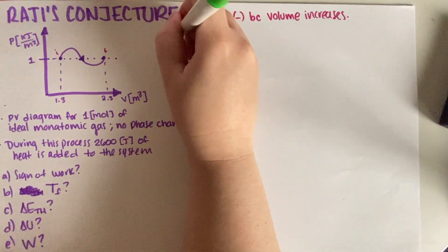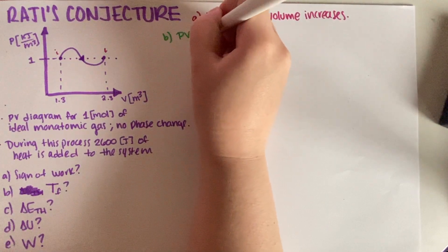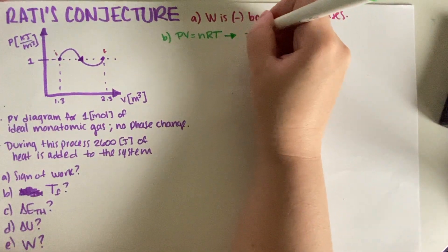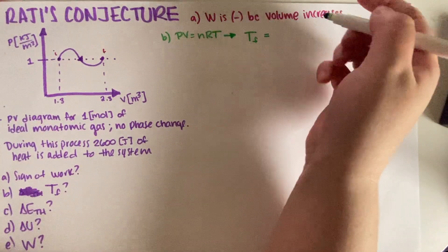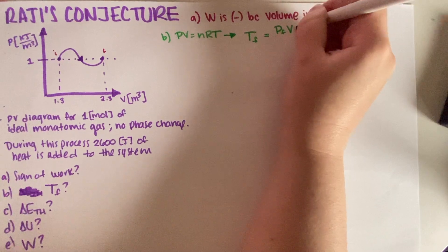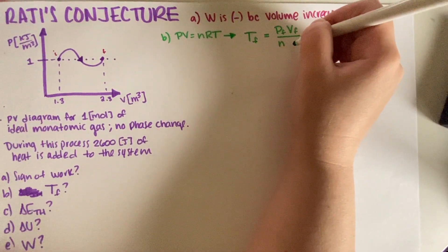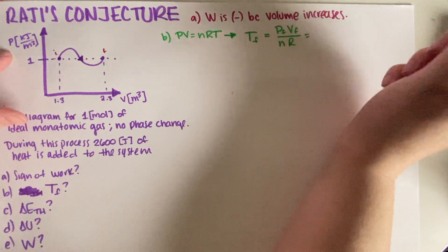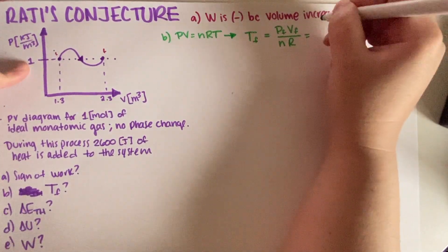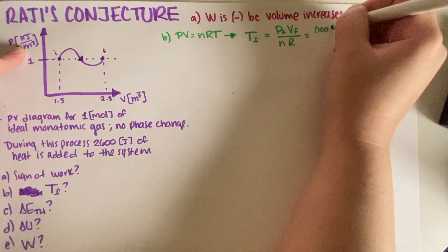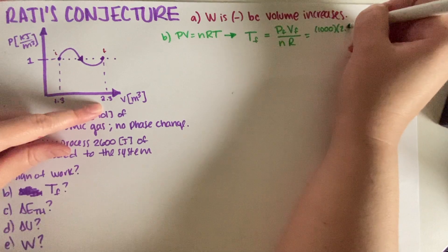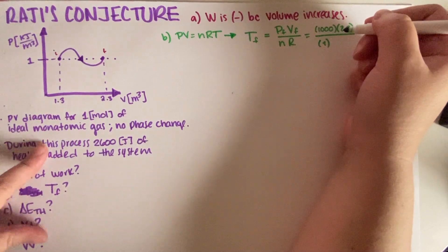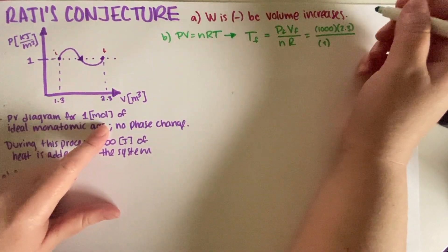So, for B, the ideal gas law is PV is equal to nRT. So, if I solve for temperature, my final temperature, this goes dividing. So, this is my final pressure, my final volume, my number of moles, which doesn't change, times R, which is just a constant. So, P_f, so this is 1, but this is kilojoules, so this is 1,000. V_f is 2.3, and it's just 1 mole.